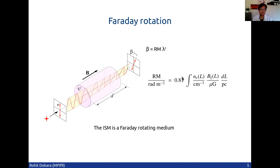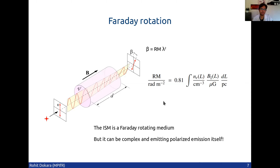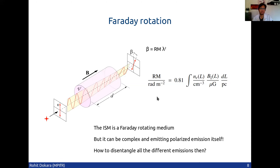The interstellar medium is such a Faraday rotating medium. So if we can measure the rotation measure, and if we have an idea of either the electron density or the magnetic field, then we can try to estimate the other quantity. However, the ISM can be quite complex and it can emit polarized emission itself. This medium does not have to be homogeneous, but this relation assumes that it's homogeneous.